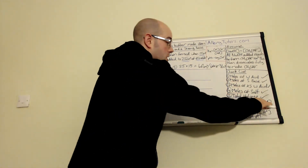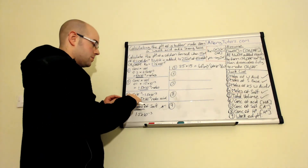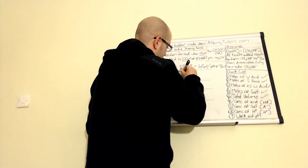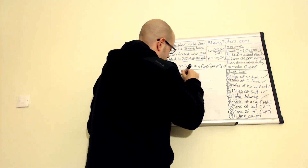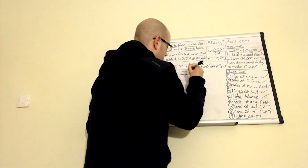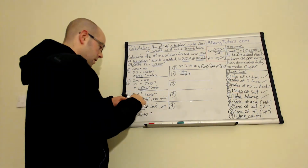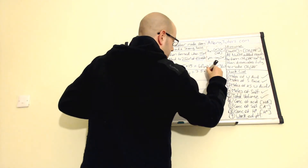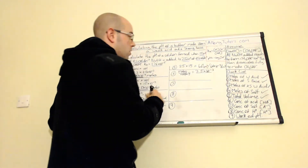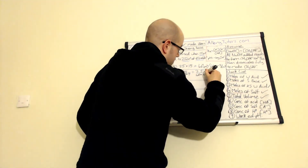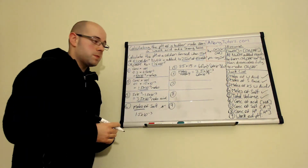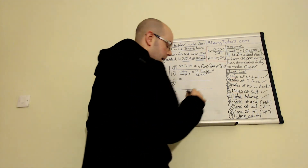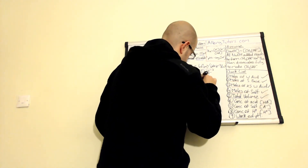Now we can work out the concentration of our acid — the excess acid left behind after mixing. Concentration = moles ÷ volume. The moles of excess acid from step 3 is 3.5 × 10⁻³, and we divide by the total volume of 40 × 10⁻³ dm³. That gives a concentration of acid of 0.0875 mol dm⁻³.